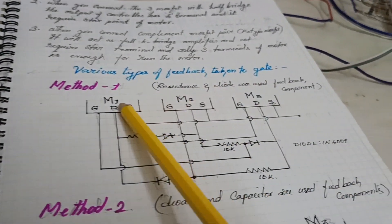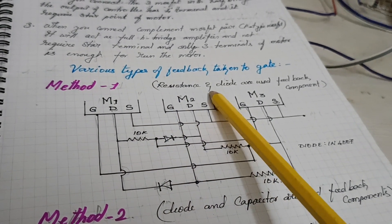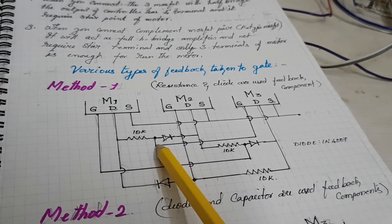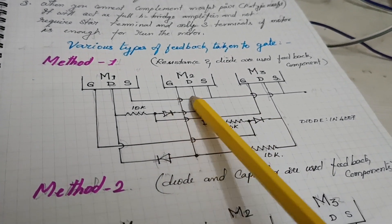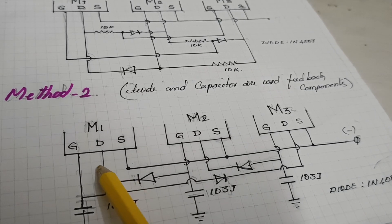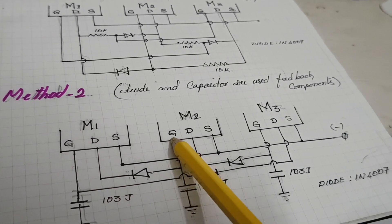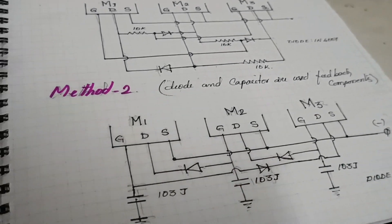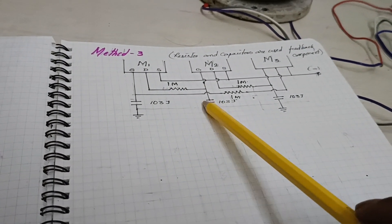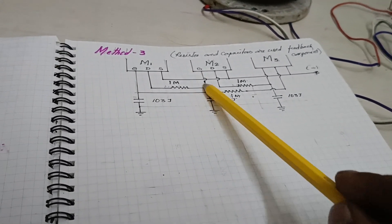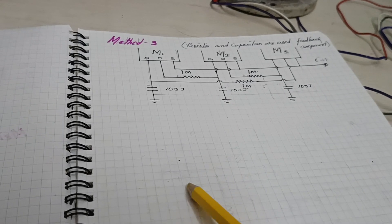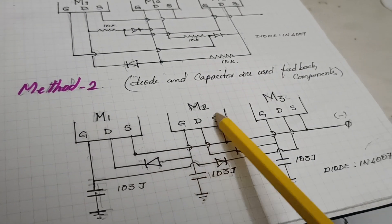There are various types of feedback taken to the gate. Method one: resistors and diodes are used as feedback components; the feedback is taken from the middle of the two components to the gate. Method two: diodes and capacitors are used; the gate signal is taken from the midpoint of the diode and capacitor. Method three: resistor and capacitor are used and the feedback is taken to the gate. These are the three feedback methods for the BLDC motor controller.